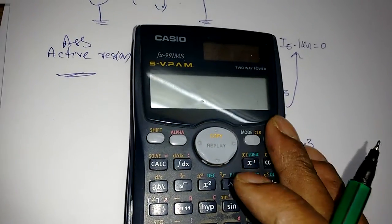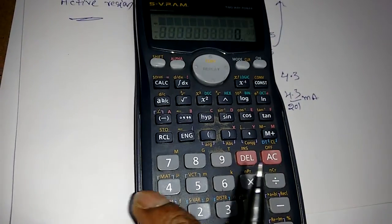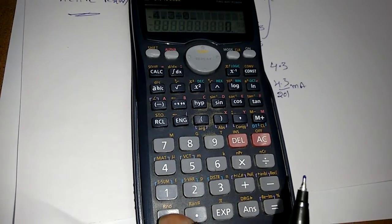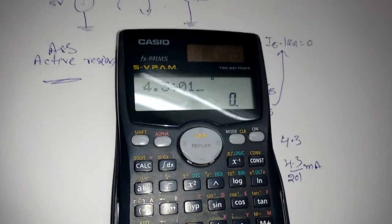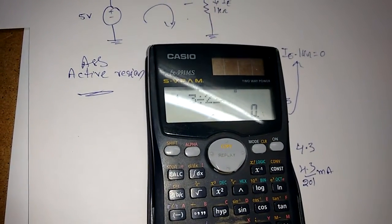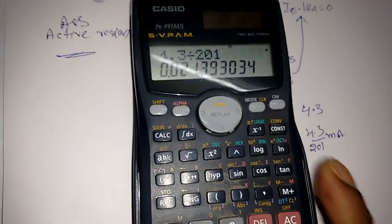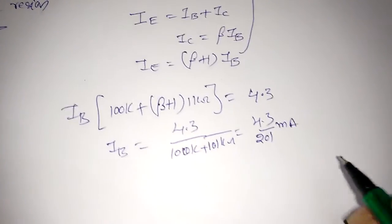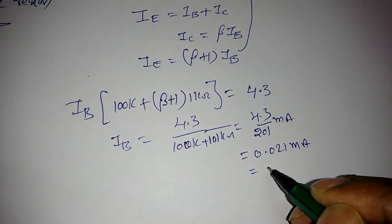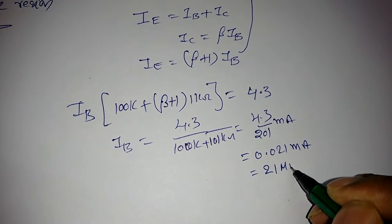Total it will become 4.3 / 201kΩ. So IB = 4.3 / 201 mA, which equals 0.021 mA or 21 µA.